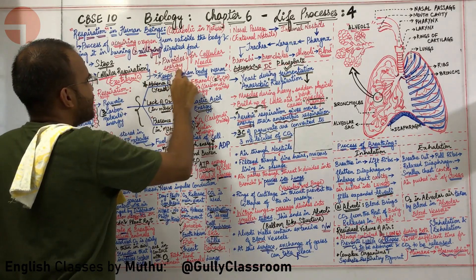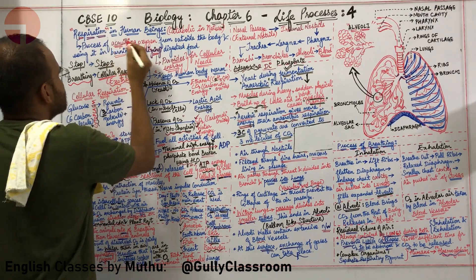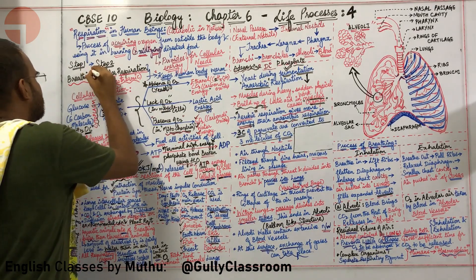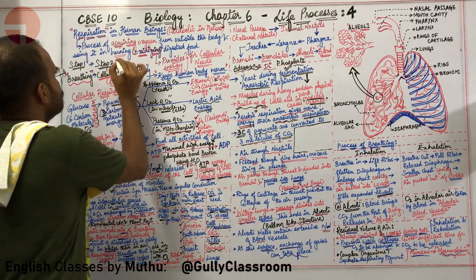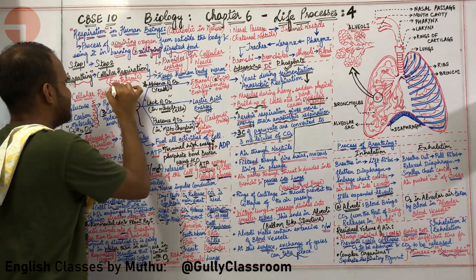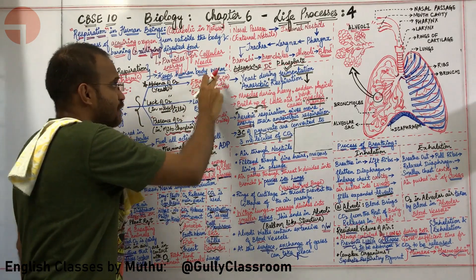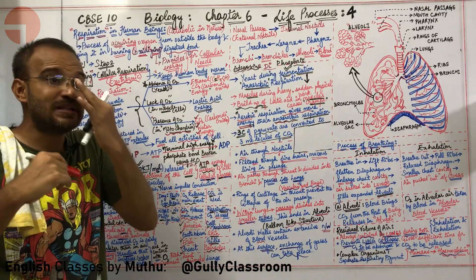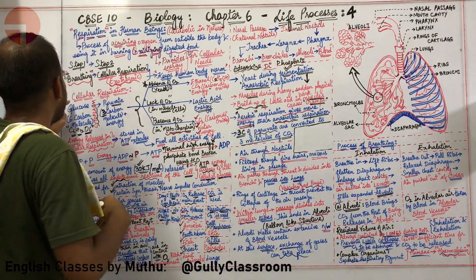Respiration is the process of acquiring oxygen from outside the body — step one, called breathing — and using it to burn digested food — step two, called respiration. It is exothermic; it gives out a lot of heat, and this heat keeps the human body warm. That is why our body is always warm when we are alive, and once life has gone out, the body immediately becomes cold.